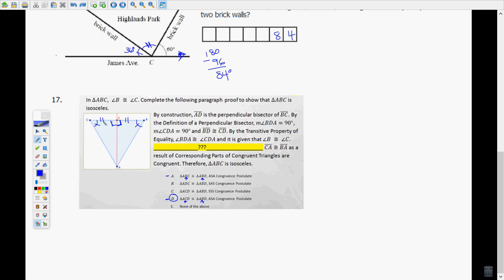By the transitive property, angle BDA is congruent to angle CDA. I don't say that's by the transitive property. I say that's because if the measures are equal, then the angles are congruent. So I wouldn't call that the transitive property. That's interesting. And it is given that angle B is congruent to angle C. That's not the main point of this proof, so that's alright.